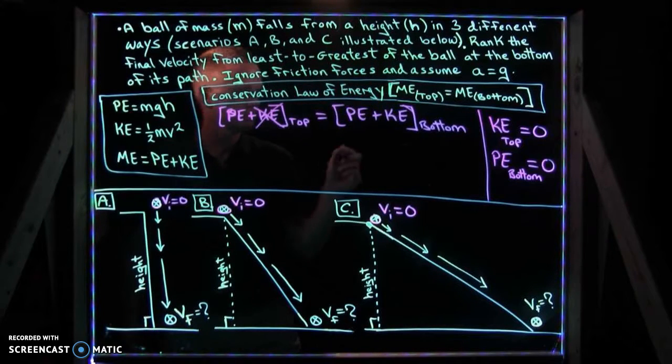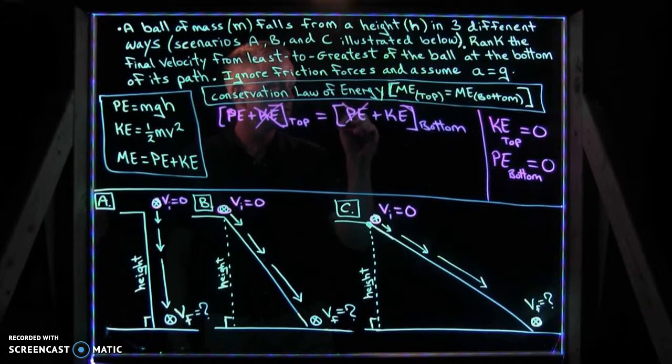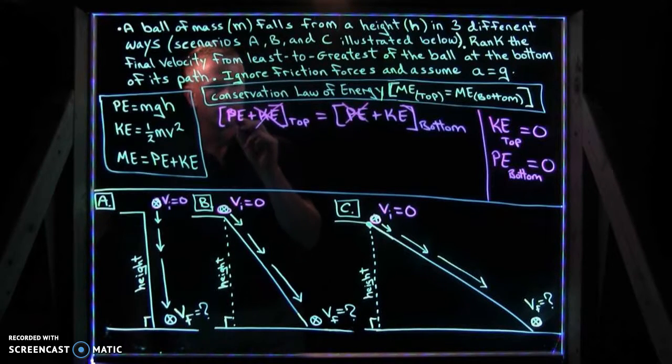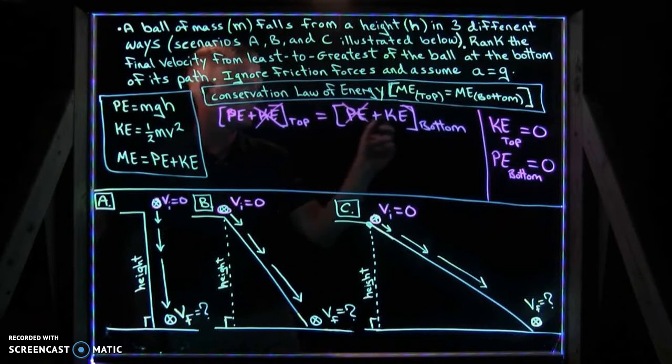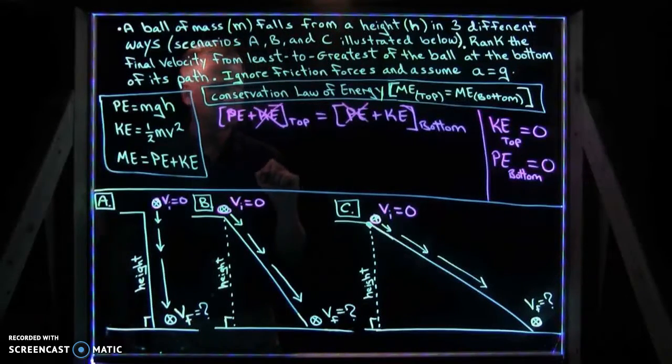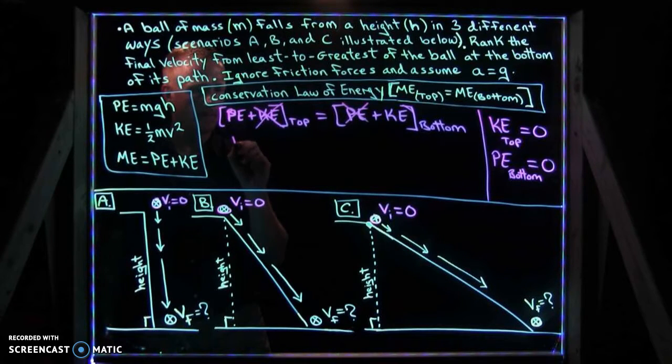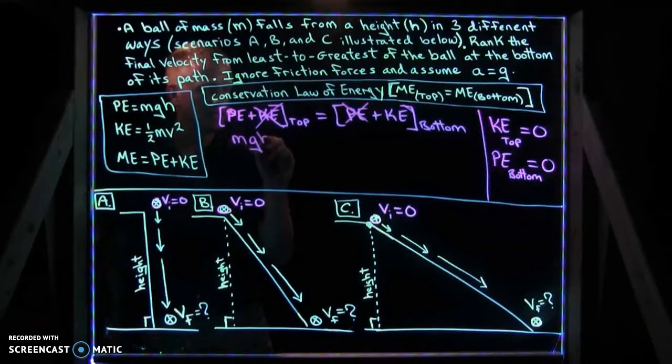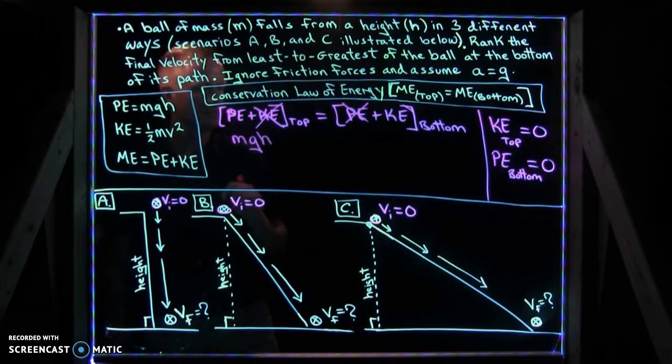Zero kinetic energy at the top. Now, we assume those in this equation, we've got potential energy at the top is equal to the kinetic energy at the bottom.